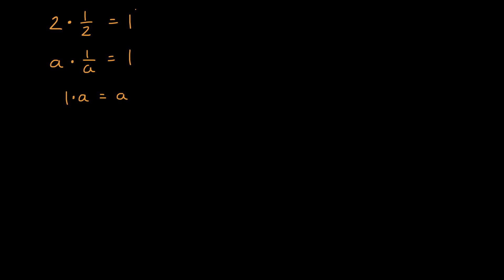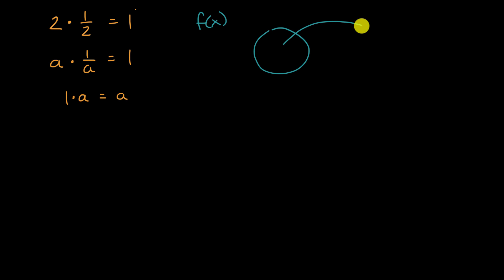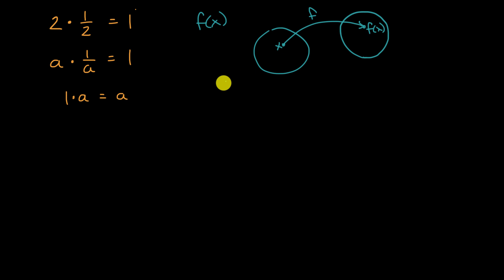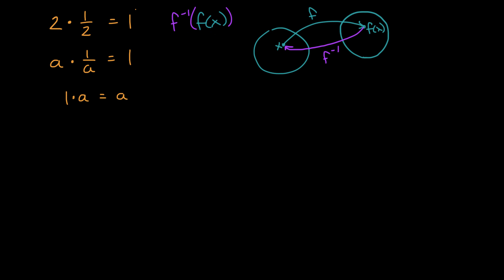Now we also have something that comes out of our knowledge of functions. We know that if there's some function — let's call it f of x — that goes from some set, we call that our domain, to some other set, we call that our range, that in many cases, but not always, there's another function that can take us back. We call that other function the inverse of f. So if you apply the inverse of f to f of x, you're going to get back to x.